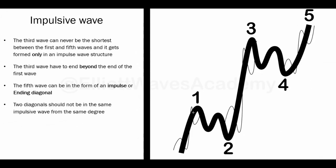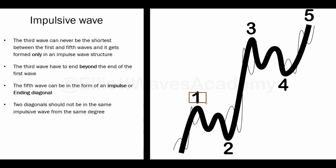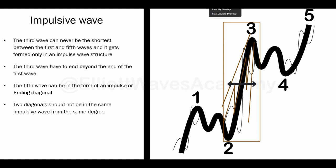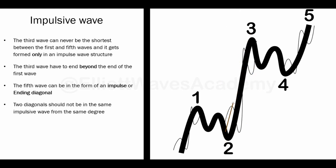There is also a rule that Wave 3 should only be in an impulsive wave shape. Unlike Wave 1, where we can see a diagonal or an impulsive wave, Wave 3 must be just an impulsive wave. We cannot see a diagonal — for example, a wedge with overlapping sub-waves — as Wave 3. We should see only an impulsive wave in Wave 3.